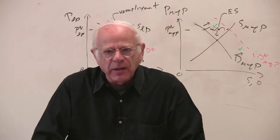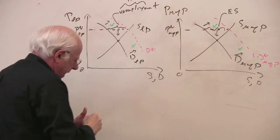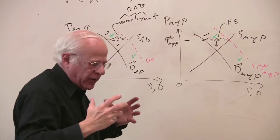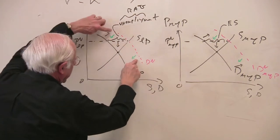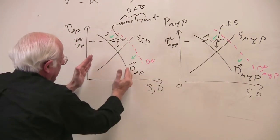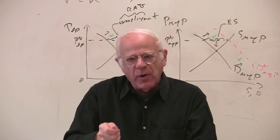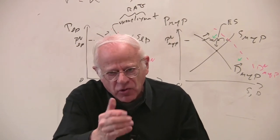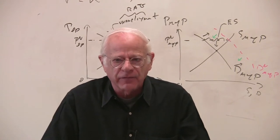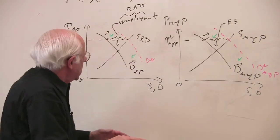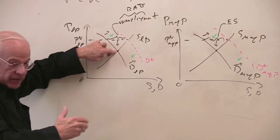The reserve army of the unemployed is internal to the system - it results as a consequence of the demand for labor power shifting back. There are two points to the reserve army of the unemployed. First, it pushes down the price of labor power to correct the disequilibrium. Second, it disciplines the workers so they will accept a lower price of labor power, otherwise they risk being let go. The reserve army of the unemployed pushes the market price down to the unchanged value, thereby correcting the situation.